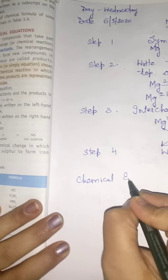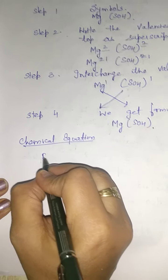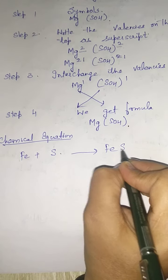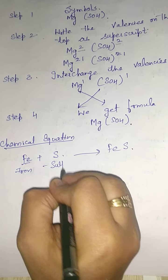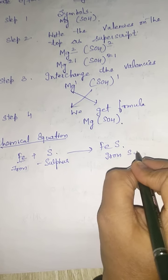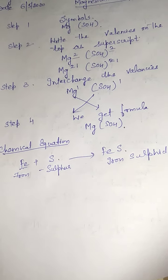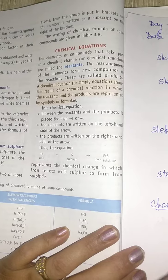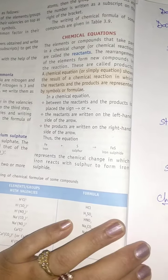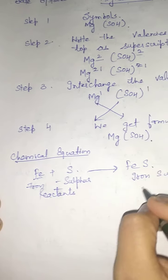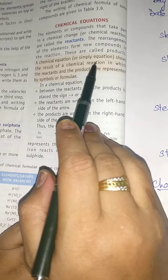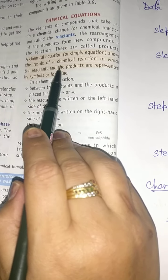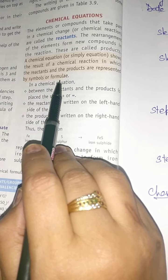In a chemical equation, I am taking the example of iron and sulfur. The symbol of iron is Fe and for sulfur it is S, and the product is iron sulfide. An arrow sign is placed between the reactants and the products. The reactants are written on the left hand side of the arrow and the products are written on the right hand side. A chemical equation shows the result of a chemical reaction in which the reactants and products are represented by a symbol or a formula.